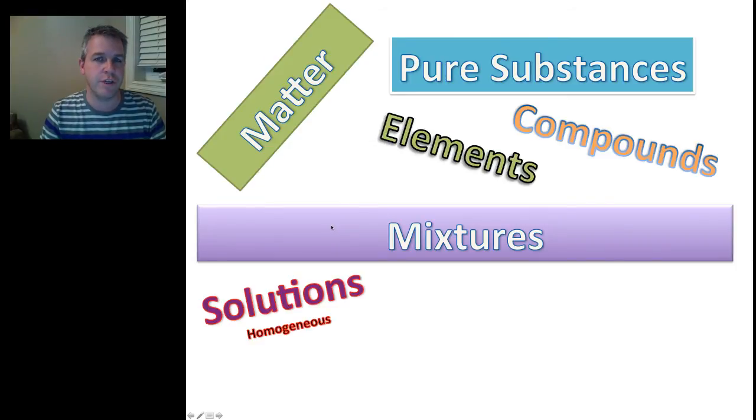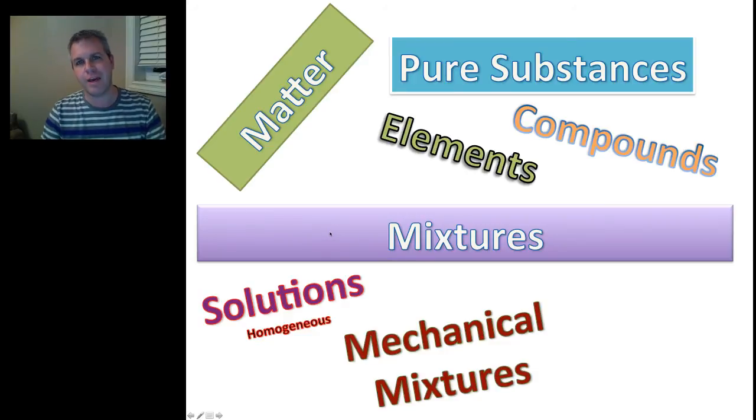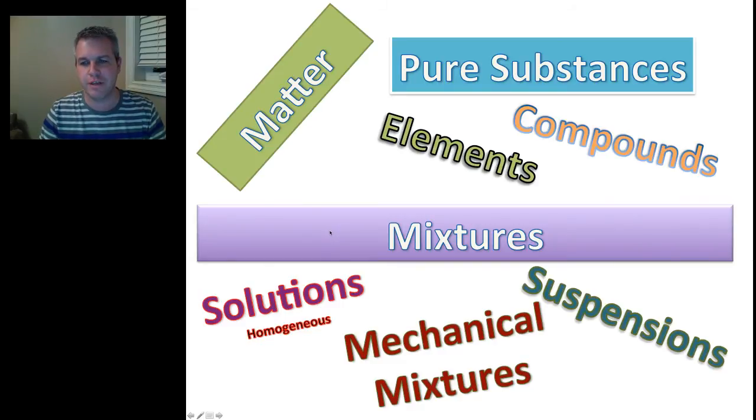Solutions, which are homogeneous. And what does homogeneous mean? It means that you cannot tell the difference. There are no two parts. So, a solution if we had salt water. You cannot see the salt within the water. It looks like one thing. Then we look at mechanical mixtures. So, a great example of a mechanical mixture. Now, we can see two parts. And a mechanical mixture might be something like granola or oatmeal with raisins in it. You'd be able to see two different parts.